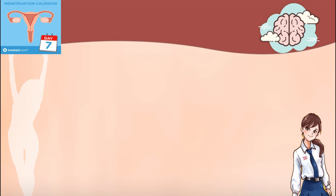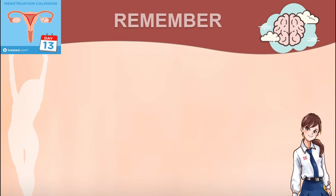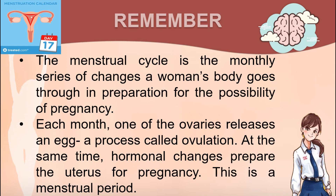Before we move on to the next activity, let us all remember this. The menstrual cycle is the monthly series of changes a woman's body goes through in preparation for the possibility of pregnancy. Each month, one of the ovaries releases an egg — a process called ovulation. At the same time, hormonal changes prepare the uterus for pregnancy. If no fertilization occurs, this results in a menstrual period.